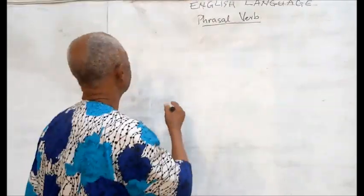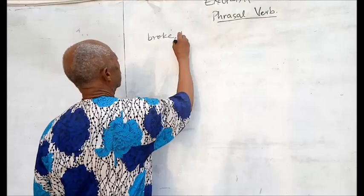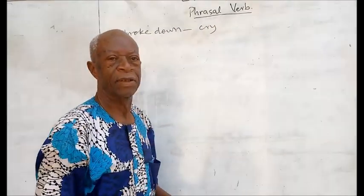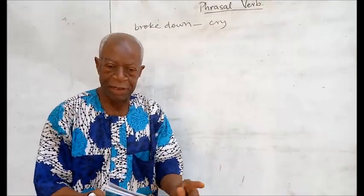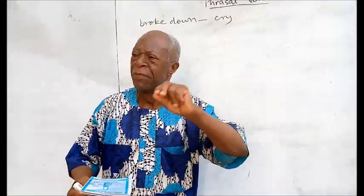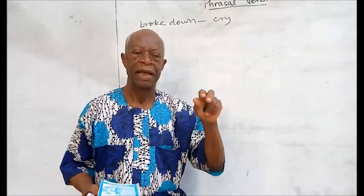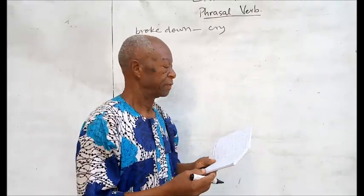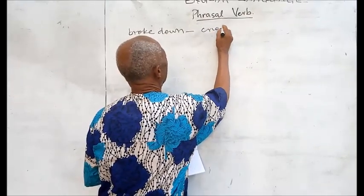For example, if I write 'break down,' it means to cry. But if you take 'break' and 'down' separately, you cannot say that it means to cry. That's what we call a phrasal verb — the two words give a different meaning from the individual components.